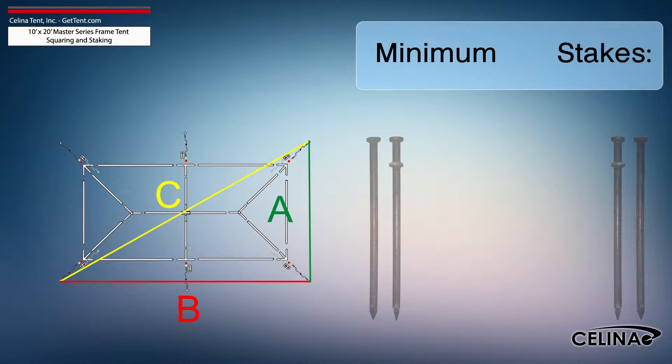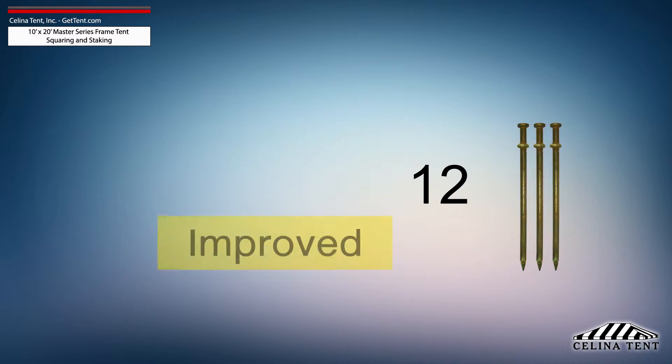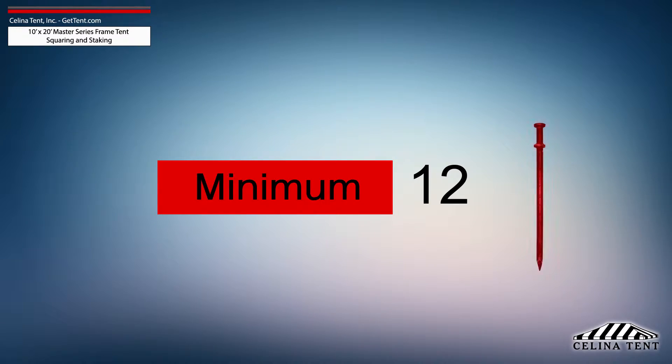Solana recommends that a 10-foot by 20-foot Master Series frame tent receives a minimum of 12 stakes. One stake at each leg for the ratchet strap, and one stake for each base plate. This amount of stakes provides the minimum amount of security for a frame tent of this size.